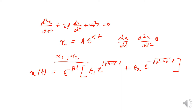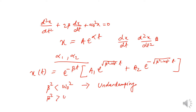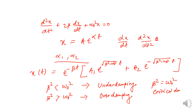We considered three cases: when β² < ω₀² (under-damping, discussed in the previous video), when β² > ω₀² (over-damping, where the damping coefficient is greater than the natural angular frequency), and when β² = ω₀² (critical damping, where the damping coefficient matches the natural angular frequency). We already discussed under-damping in detail; now we will discuss over-damping and critical damping.